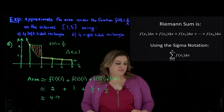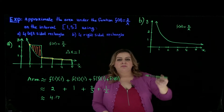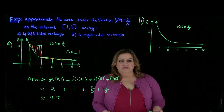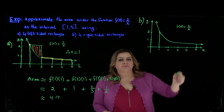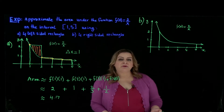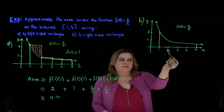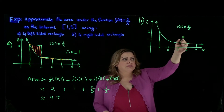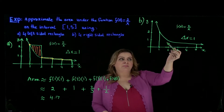We now move to part B. We want to approximate the same area but using the four right-sided rectangles. We have the same interval from x equals 1 to x equals 5. Using the right-sided rectangles, we make sure the upper right angle of each rectangle intersects with our curve. We still construct four rectangles, so delta x, the width of the rectangles, equals 1. Notice that the right-sided rectangles will be under the curve.